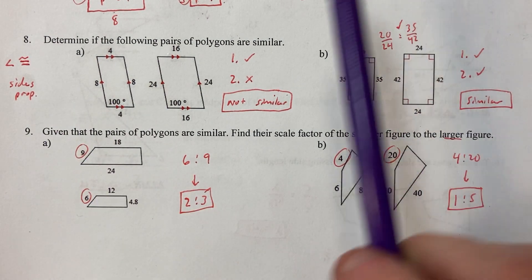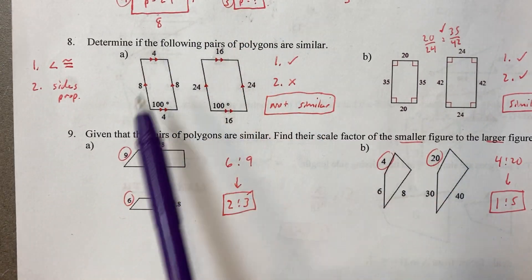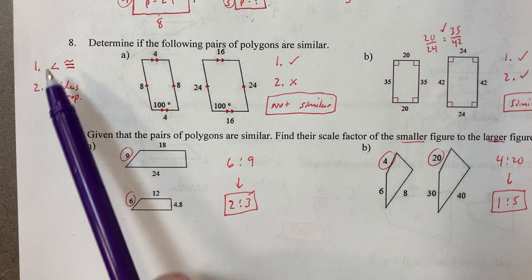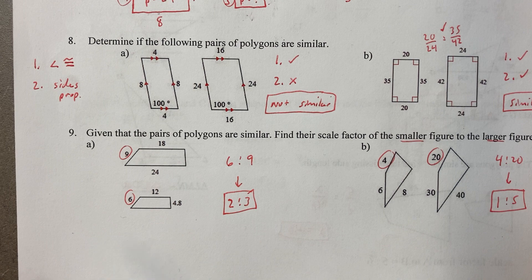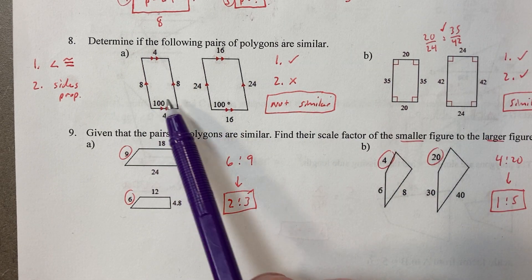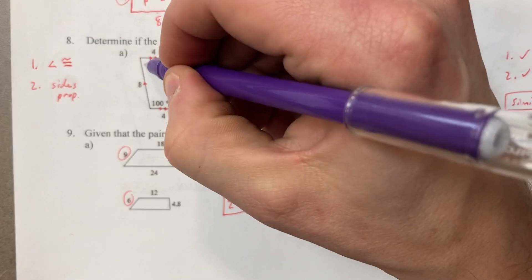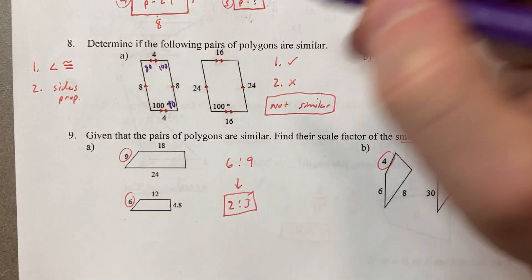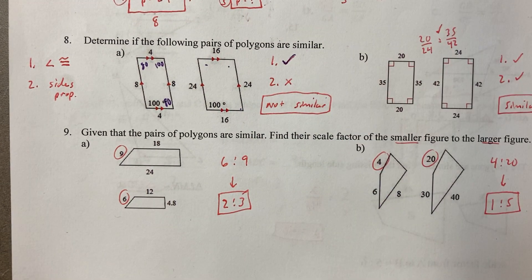Determine if similar. They have to meet the two criteria to be similar. Angles have to be congruent, the sides have to be proportional. In this problem, because they are parallelograms, this would have to be 100, this would have to be 80. So angles, check.